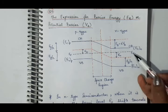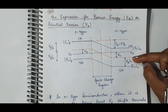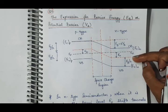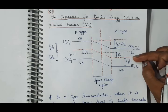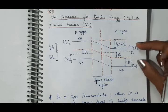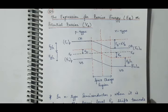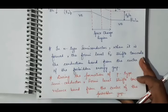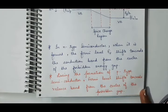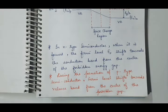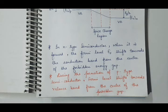In the same way, on this side, the initial position of the Fermi level divides the total energy gap EG into two equal halves: EG/2 and EG/2. In the N-type semiconductor, the Fermi level shifts towards the conduction band, and in the P-type semiconductor, the Fermi level shifts towards the valence band from the center of the forbidden gap.